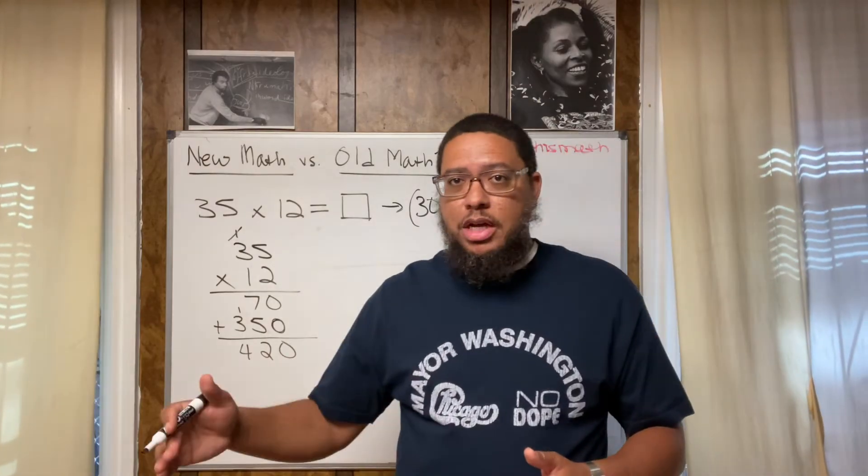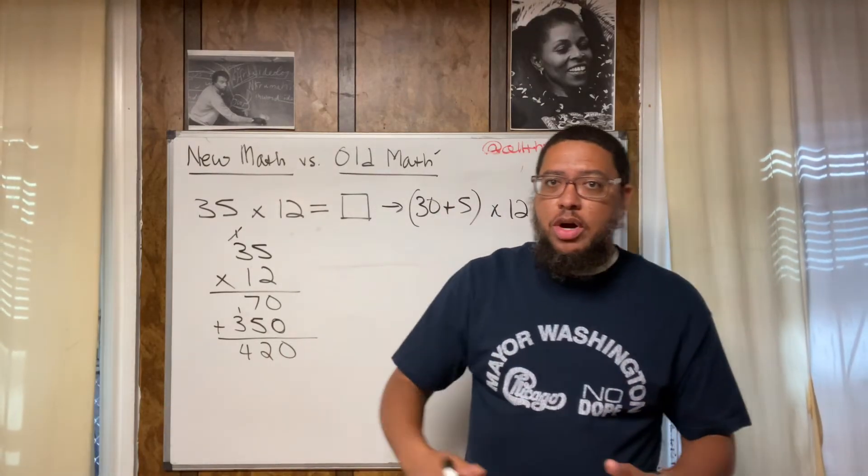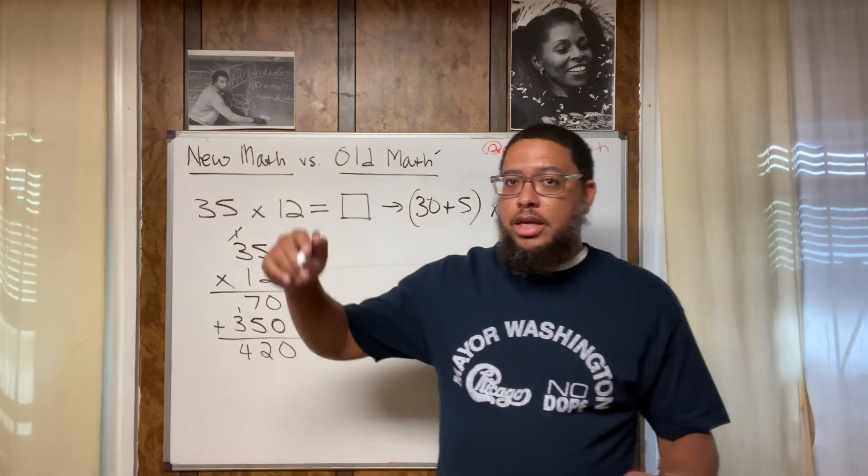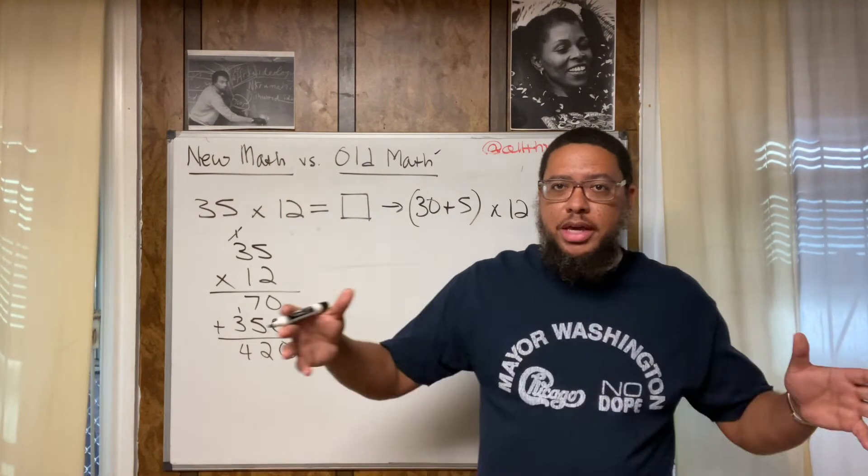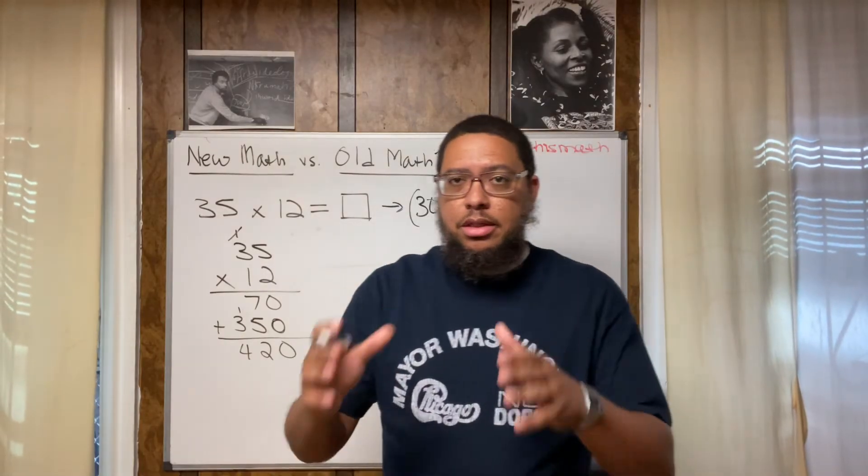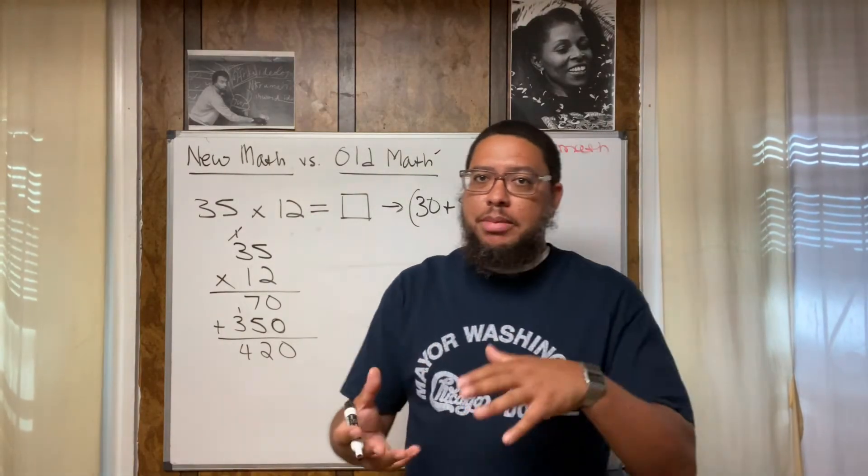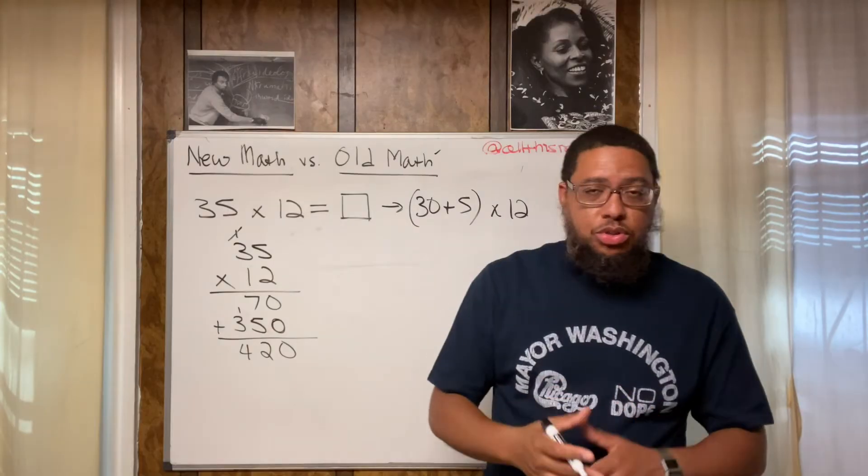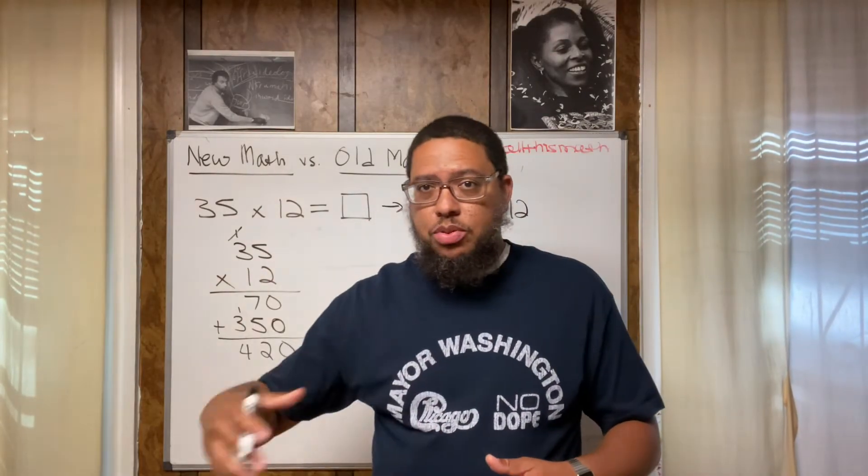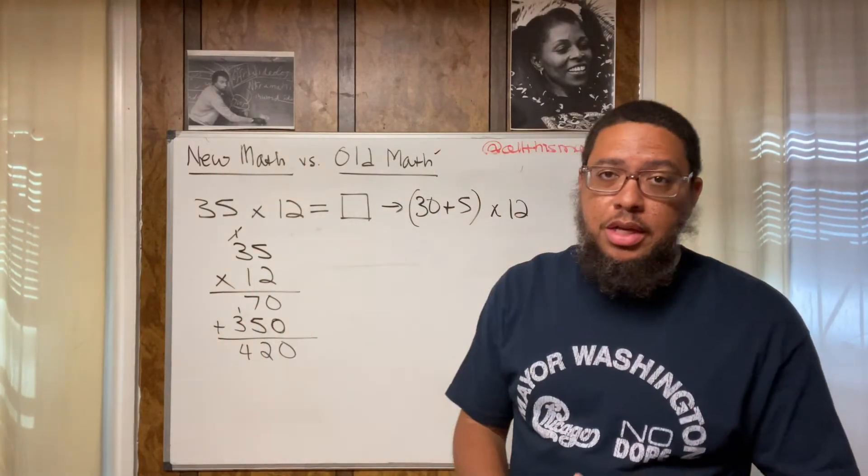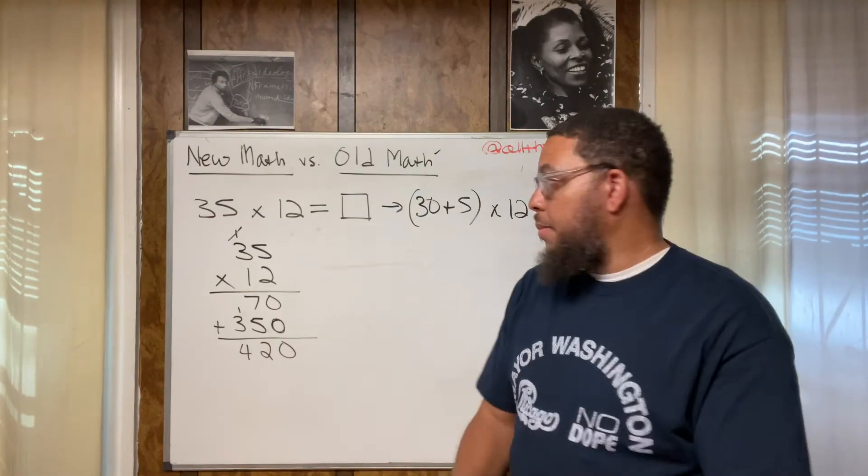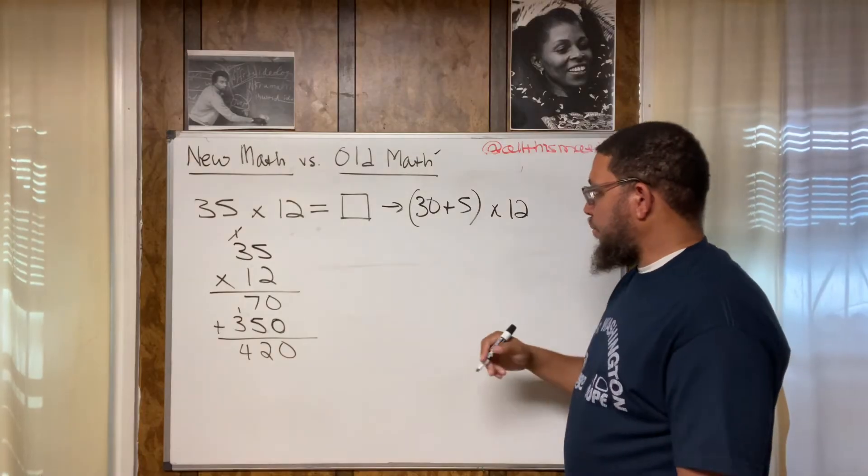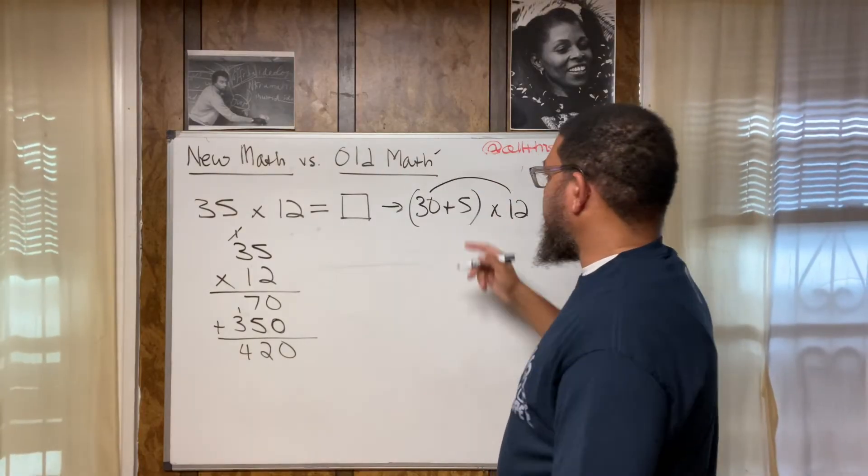Everybody should memorize their multiplication facts, at least up to 12 times 12. You should go past 12 times 12, but at a minimum, you need to know up to 12 times 12. You need to know what one times one is, and you need to know that 12 times 12 is 144, every multiplication fact in between. Just like the multiplication chart in the back of the marble composition notebooks. You need to at least know those. You should go up to 15 times 15, 20 times 20, 25 times 25, 30 times 30. There's no limit. You don't got to stop at 12 times 12, but at a minimum, you need to know that because why?